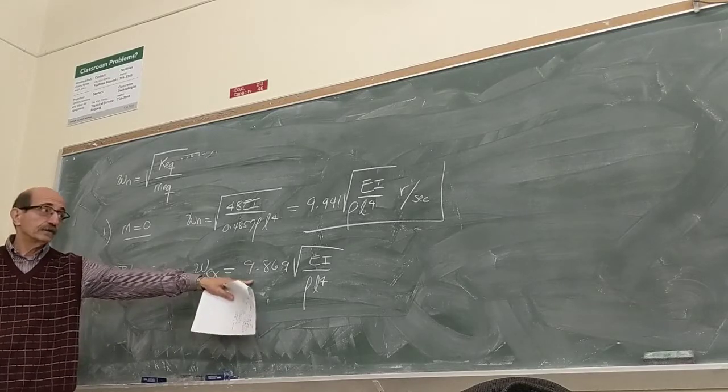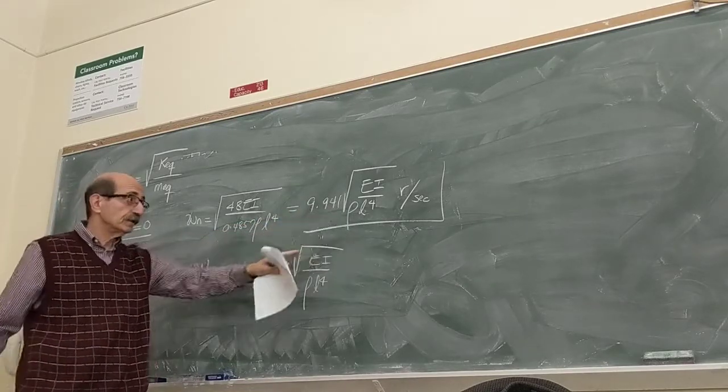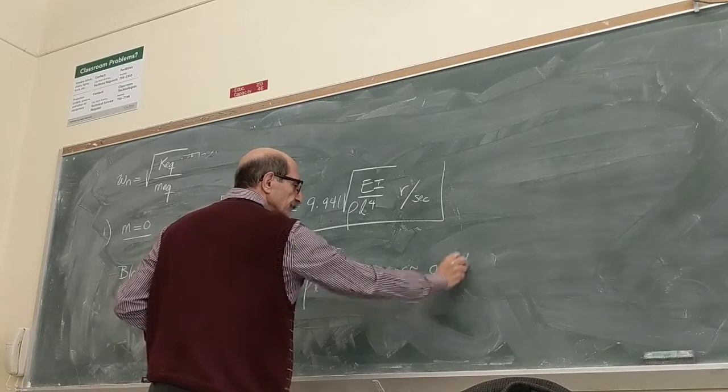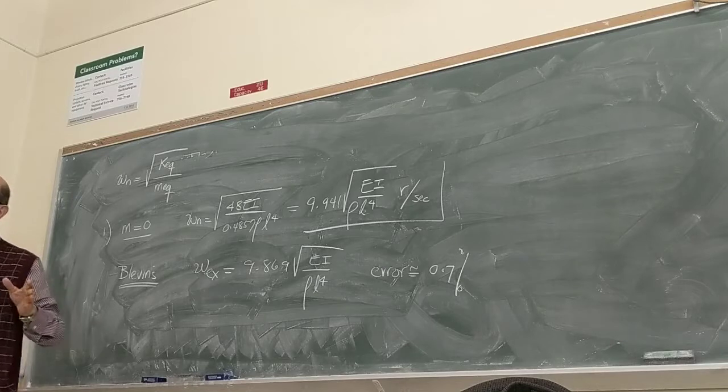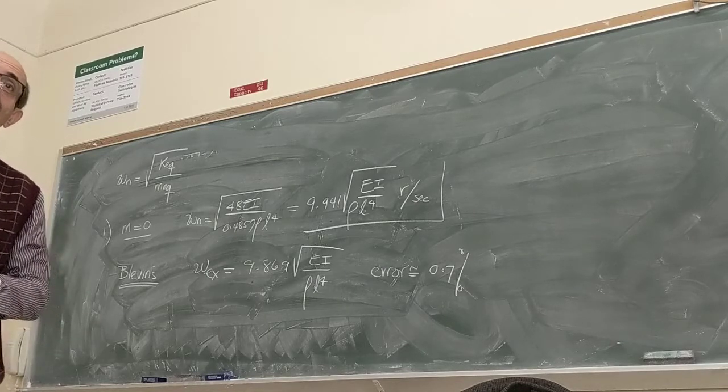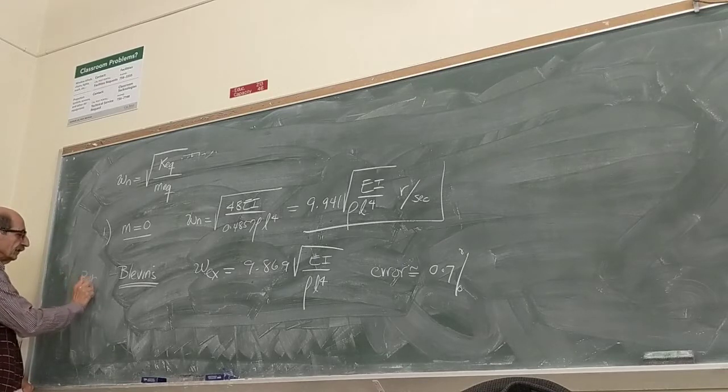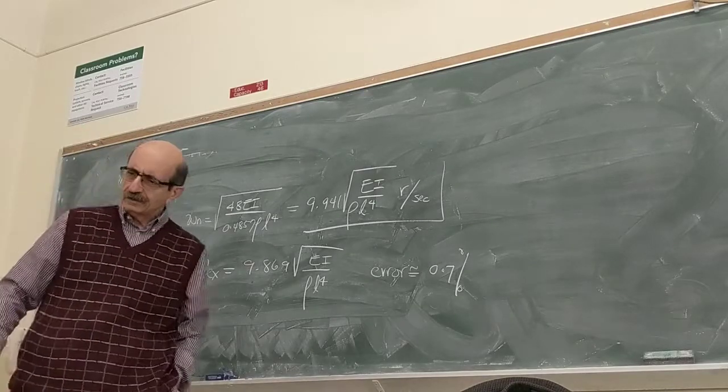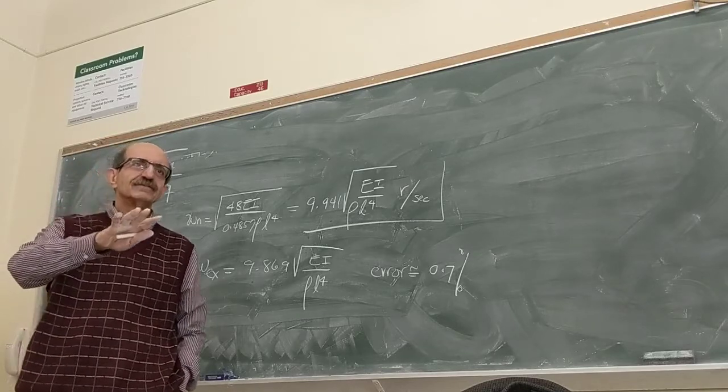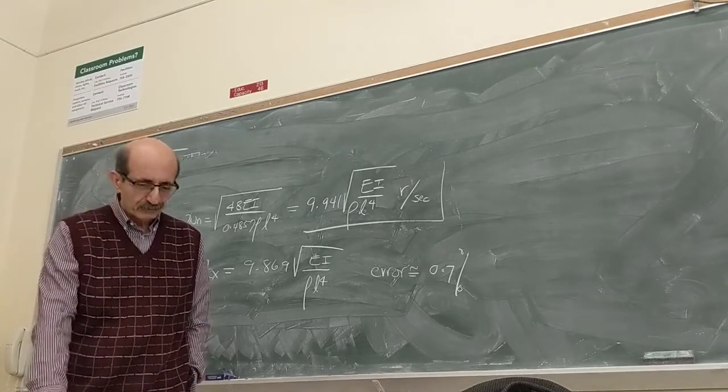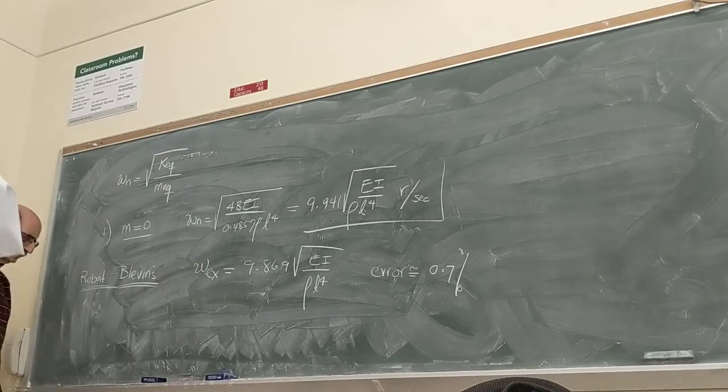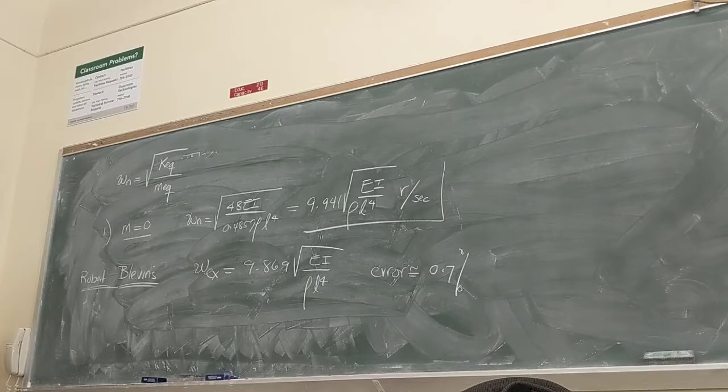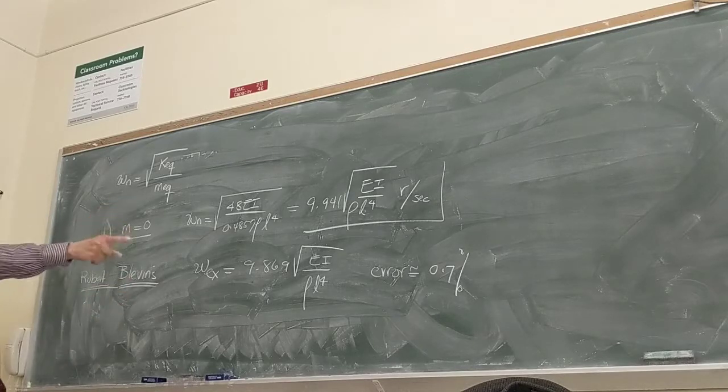But, in reality, there is no such a thing as lumped mass. Every system is continuous. So, you can actually use partial differential equations approach to derive the exact solution for vibration of all those physical systems. Like Blevins did, he did almost everything you can imagine, a beam, simply supported, cantilever, multiple supports, frames, and drove the exact solution for their natural frequencies and mode shapes, and tabulated those. So, in that book, the natural frequency for a simply supported beam with a mass density of rho is tabulated as the exact, 9.869 EI over rho L to the 4th.